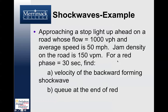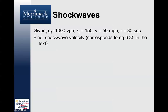Here's the example: a stoplight turns on up ahead on a road with a flow of 1,000 vehicles per hour, an average speed of 50 mph, a jam density of 150 vehicles per mile, and a red phase of 30 seconds. We want to find the velocity of the backward-forming shock wave — that wave of tail lights coming at us — and the length of the queue at the end of the red phase.